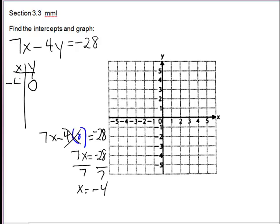The x-intercept is negative 4, 0. Then we'll find our y-intercept, which says put 0 into the x.